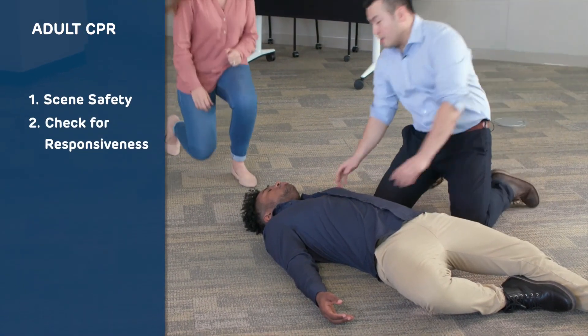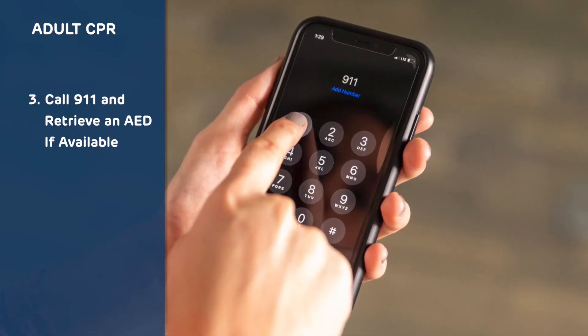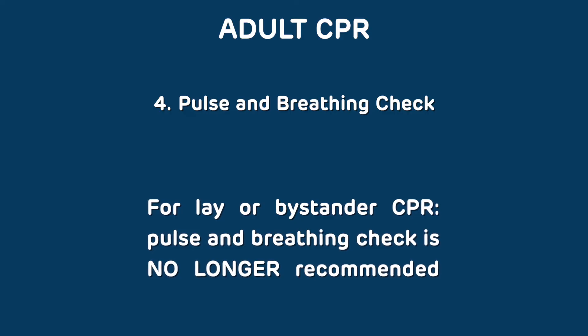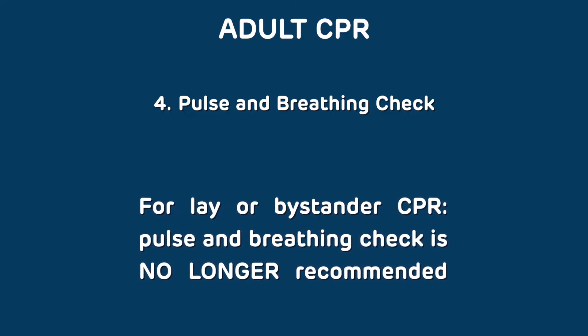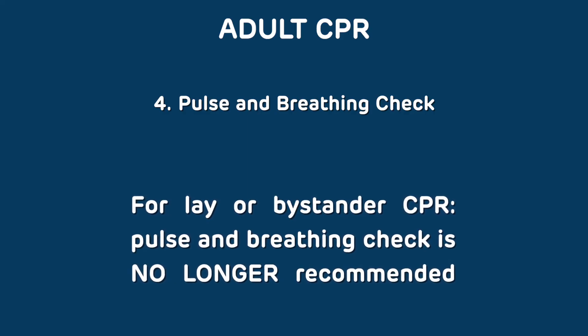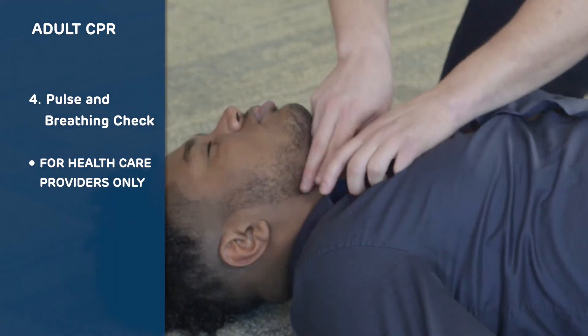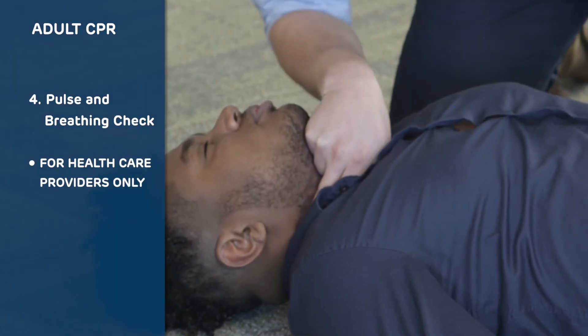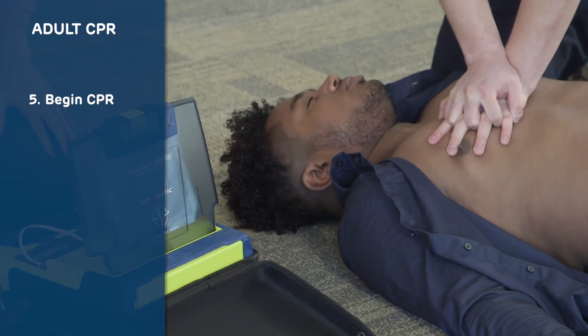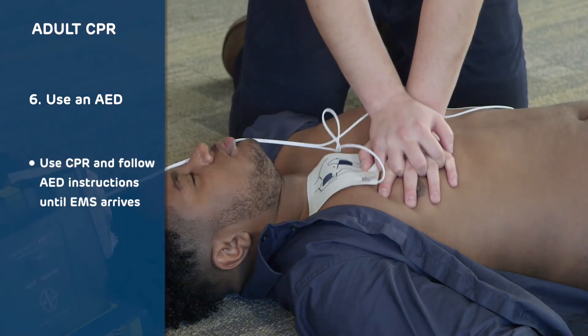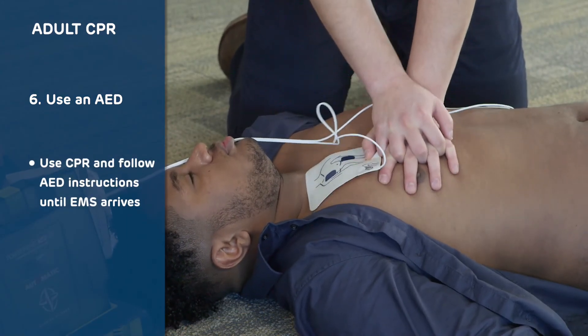Let's review the steps of adult CPR and AED use again. First, assess the scene and check for responsiveness. Next, call 911 and get an AED if available. Pulse and breathing check: for lay or bystander rescuers, pulse and breathing check is no longer recommended. For healthcare providers, check for breathing and if they have a pulse. If not, begin hands-only CPR and use the AED once it arrives. Continue CPR and follow AED instructions until EMS arrives.